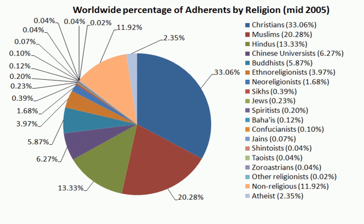Hinduism developed in interaction with other religions and peoples. The emerging self-definitions of Hinduism were forged in the context of continuous interaction with heterodox religions — Buddhists, Jains, Ahivikas — throughout this whole period, and with foreign people — Yavanas or Greeks, Sakas or Scythians, Pallavas or Parthians, and Kusanas or Kushans — between the Mauryan Empire and the rise of the Guptas.